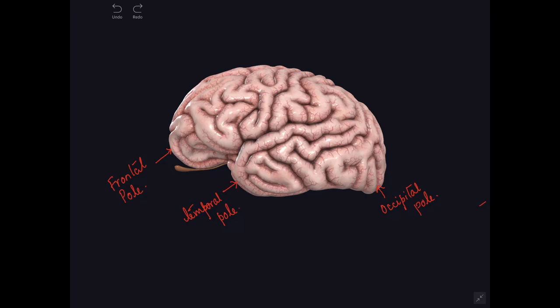We have a frontal pole in front, an occipital pole behind, and a temporal pole below and in front. The temporal pole is the primitive posterior pole which is curved antero-inferiorly for better accommodation. The frontal pole is supplied by the cortical branches of the anterior cerebral artery, the temporal pole by the middle cerebral artery, and the occipital pole by the posterior cerebral artery.